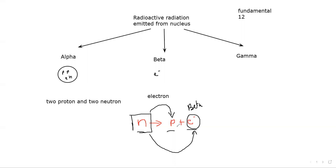As the number of protons increases in the nucleus after beta decay, it does not make the nucleus very stable. The beta decay can occur due to the limited space available for particles inside the nucleus.